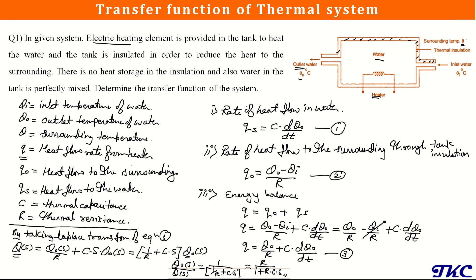By cross-multiplying r, we rewrote the expression as R/(1 + RCs). This is how we can determine the transfer function for any thermal system by determining the heat flow rate based on thermal capacitance and heat flow rate based on thermal resistance. We saw what the different elements involved in the mathematical model of a thermal system are — thermal resistance and thermal capacitance — and we took this example to find the transfer function of a given thermal system.